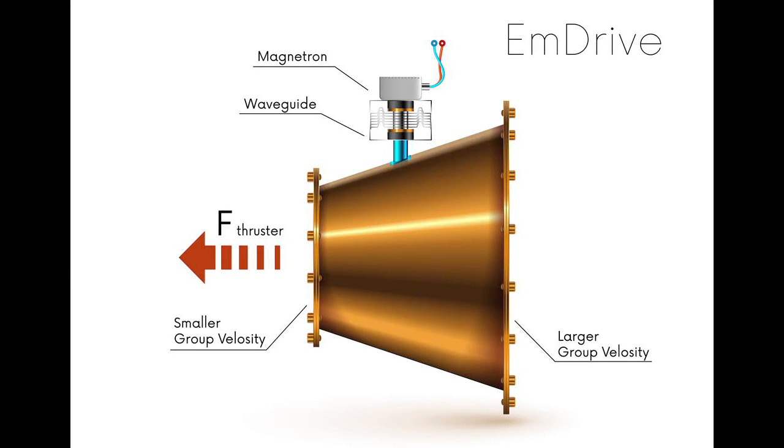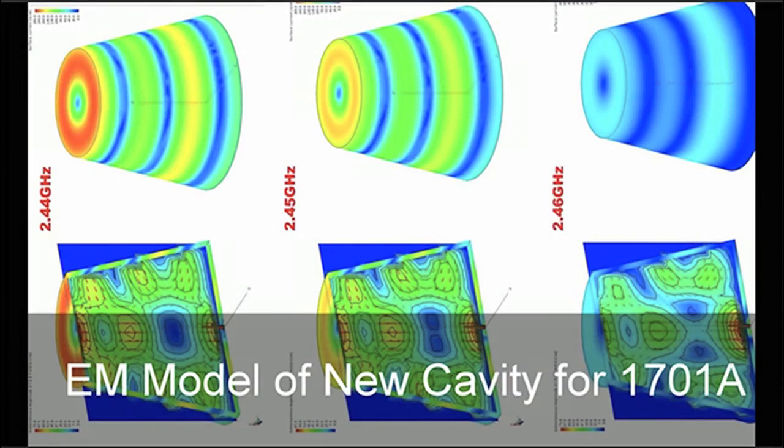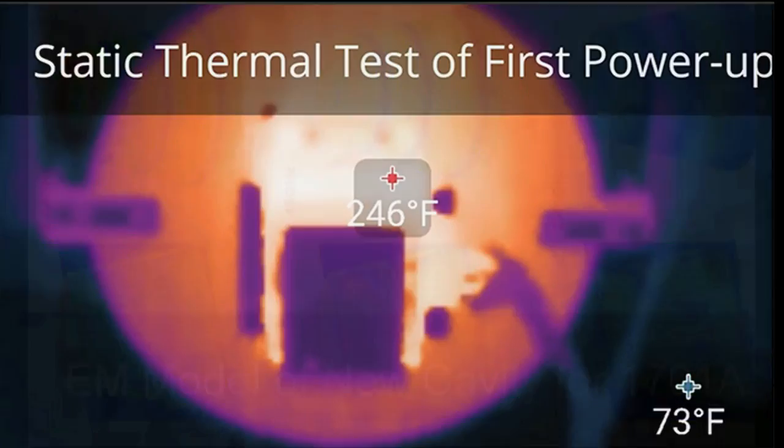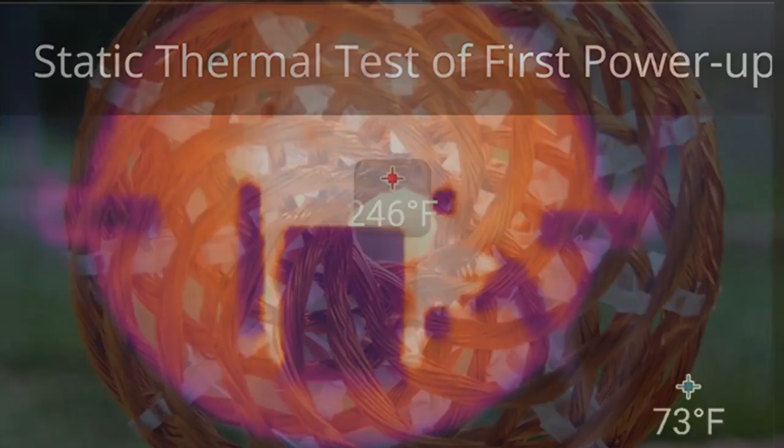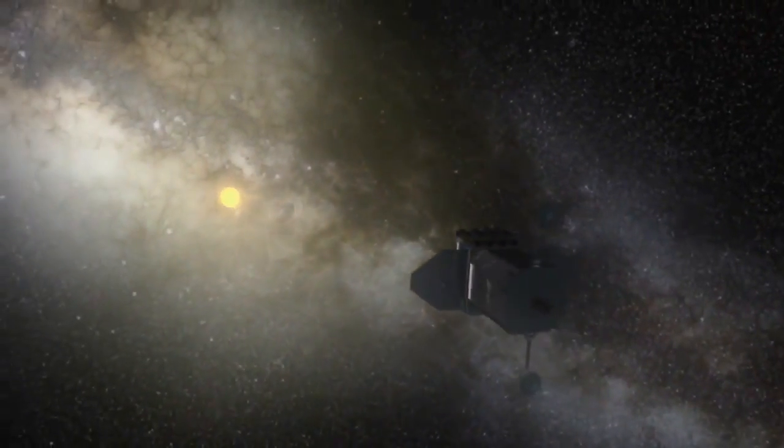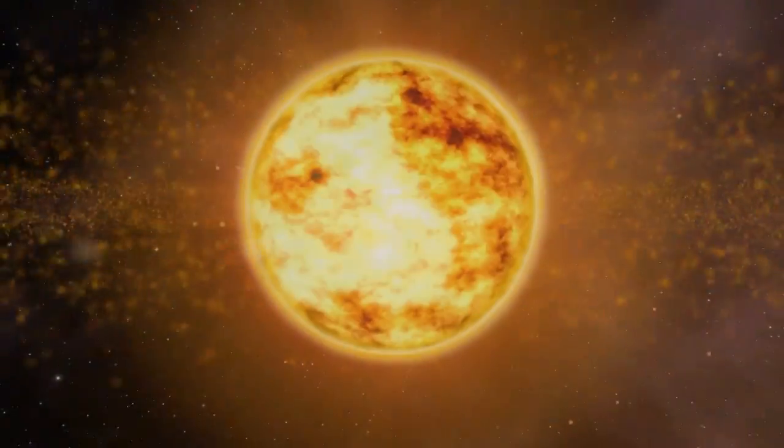An EM drive uses electricity to generate microwaves inside a concave cavity to create thrust on the other end. By using the heat generated from our EM drive in conjunction with several other technologies, we can rectify our energy into a perpetual thrust engine giving us endless energy to travel to our neighboring star.